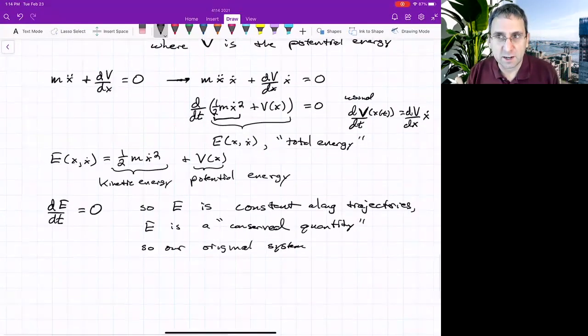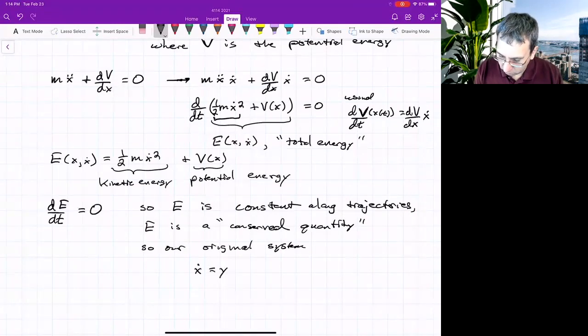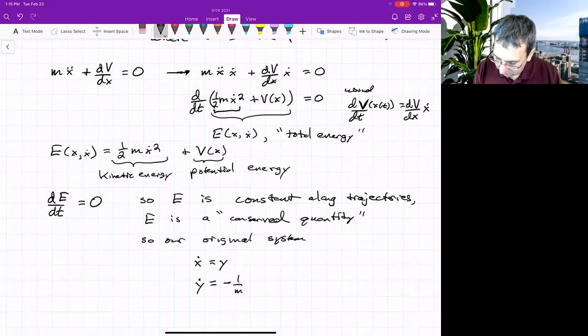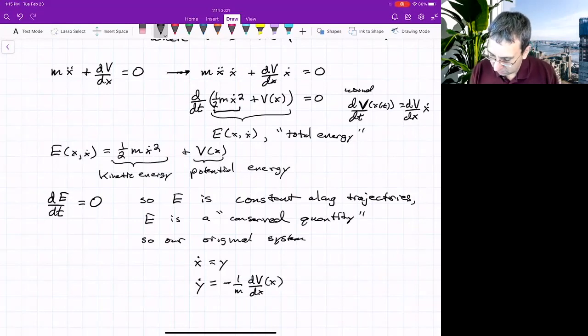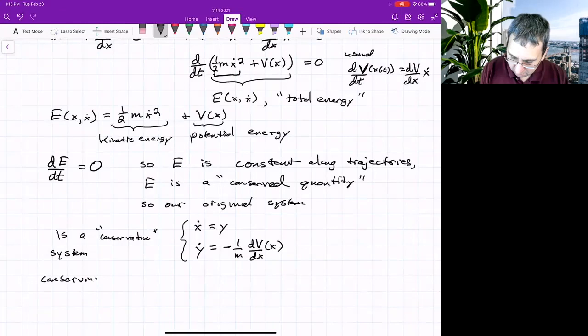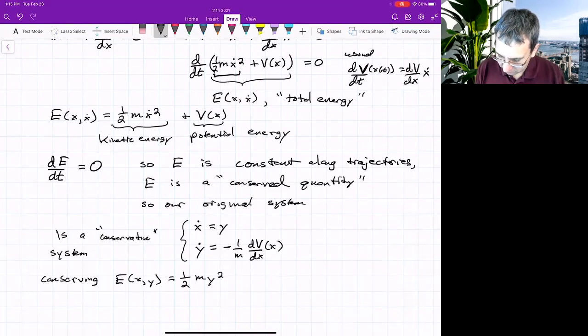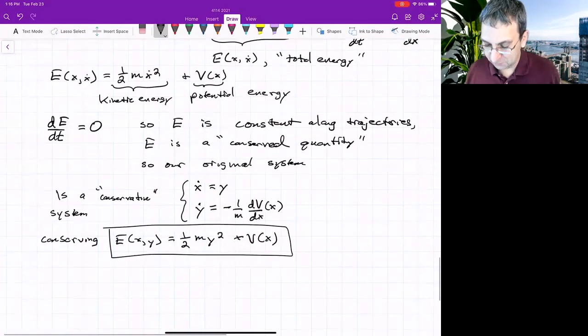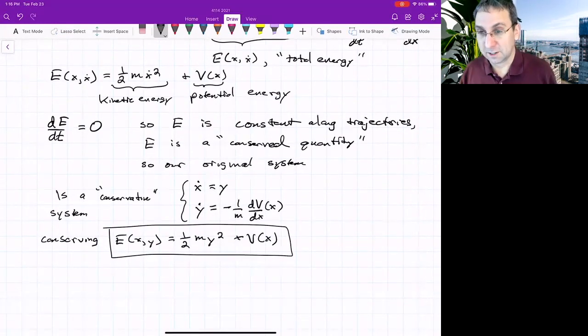Our original system, if we were to write it in terms of first order derivatives, it would be x dot equals y and y dot equals negative 1 over m dv dx, which is a function of x. Our original system, this thing, is a conservative system. And we could write it in terms of x and y instead of x and x dot. One half m y squared plus v of x. Now I said this special case of a Hamiltonian system.